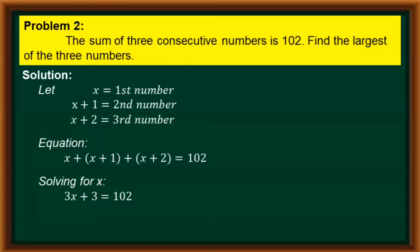We now transpose positive 3 to the right side of our equation. So we have 3x equals 102 minus 3. 102 minus 3 equals 99. Finally, to solve for the value of x, we divide both sides by 3. The 3s on the left side cancel out, and 99 divided by 3 gives us 33. Hence, x is equal to 33.